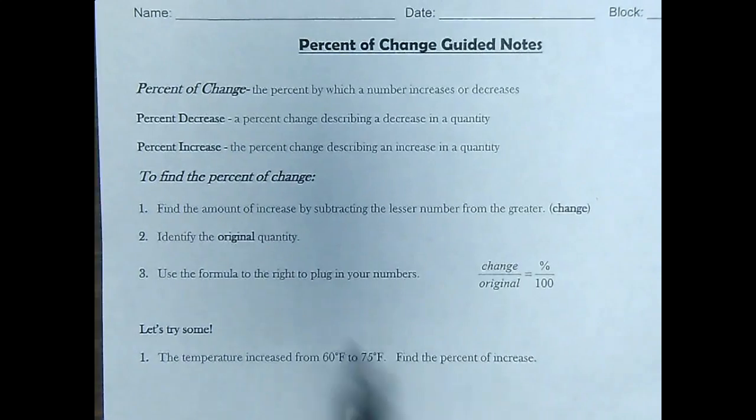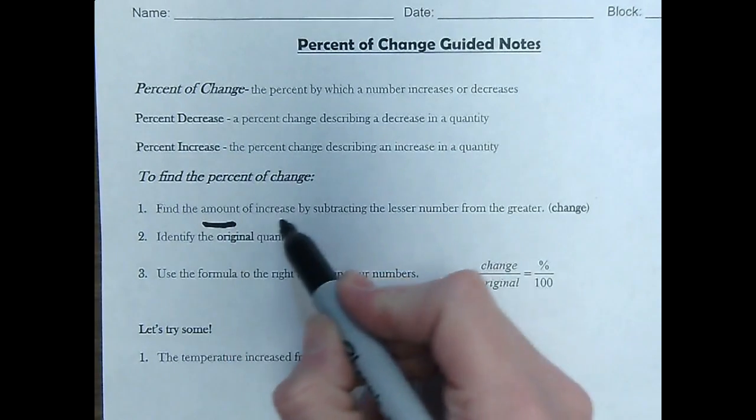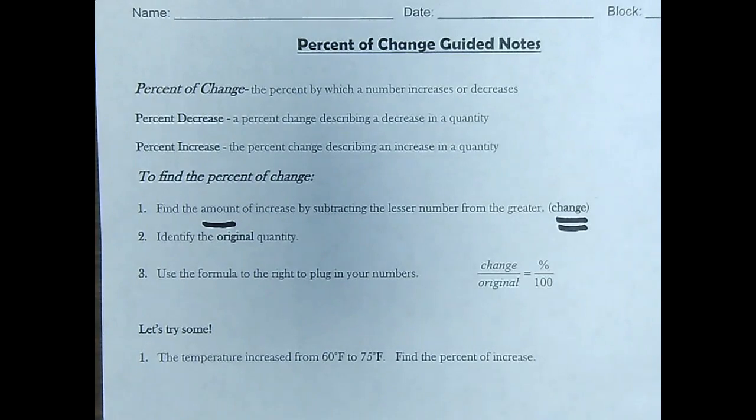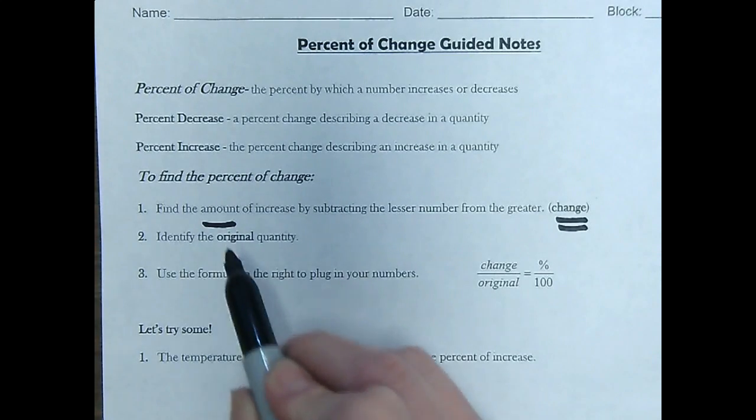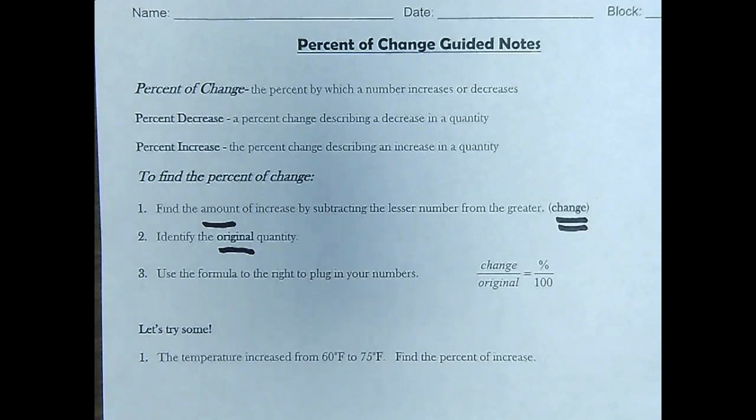So there is a formula to find this. First, you want to find the amount of increase or decrease. You want to find the amount of change. Then, identify which is the original quantity.